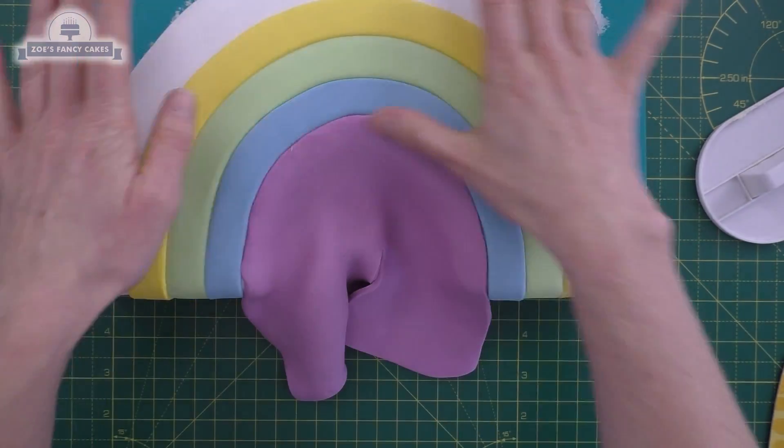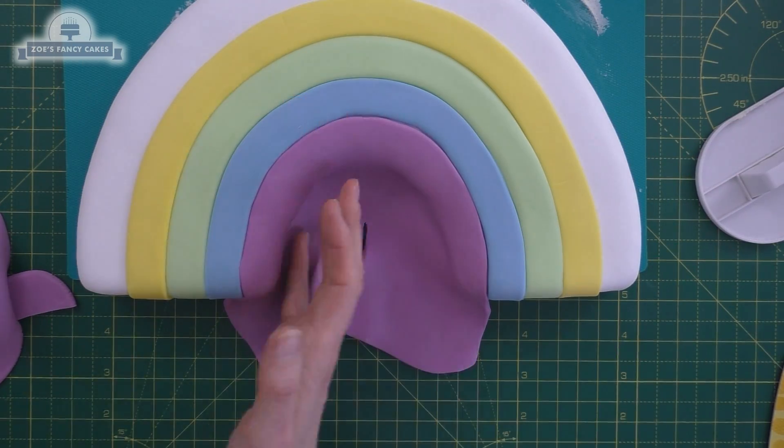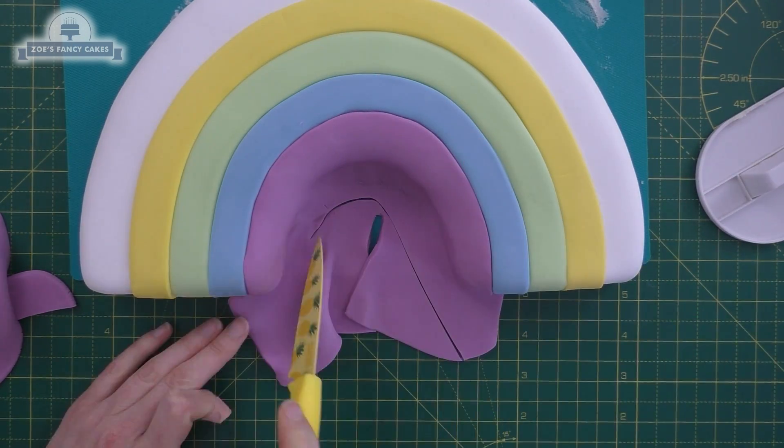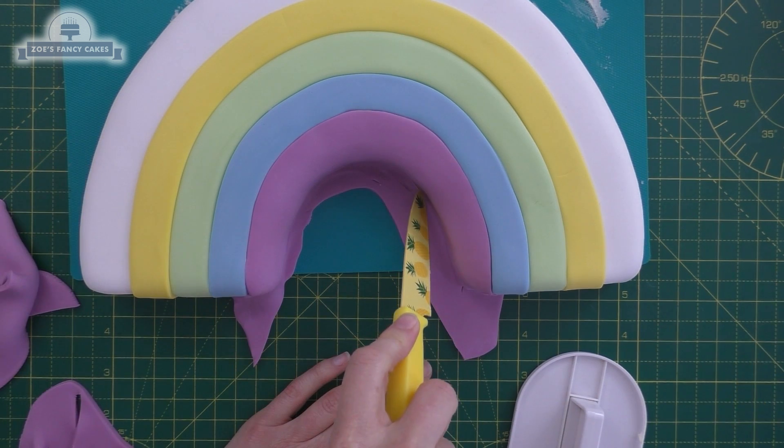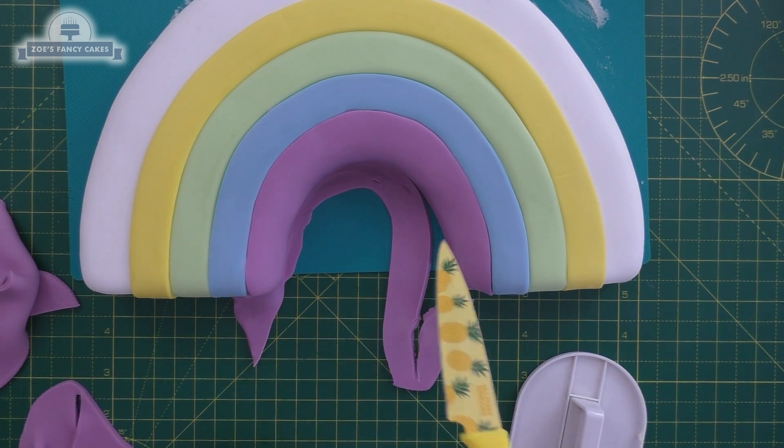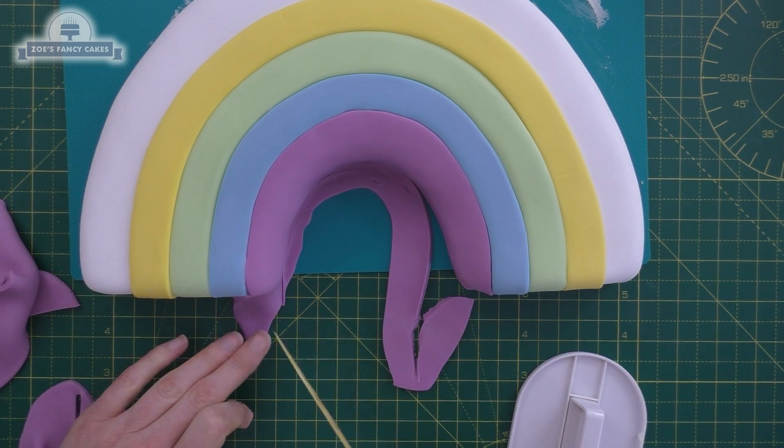Push that into the arch and then cut off all that extra from there. So we've got two more colors to add now to the top. We're going to have an orange strip just above the yellow one.